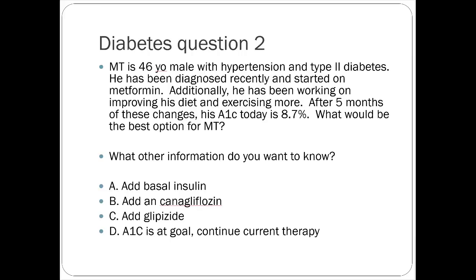For canagliflozin and the other SGLT2 inhibitors, you'd want to know creatinine clearance. Compromised renal function is a big red flag. Most of these agents aren't recommended if creatinine clearance is under 60; one may allow use with caution between 45 and 60, but under 30 they're universally contraindicated. They need to reach the kidneys to be effective and can accumulate with side effects.